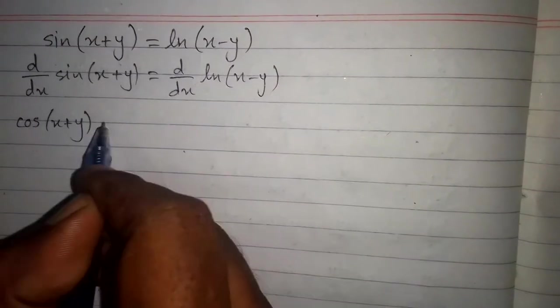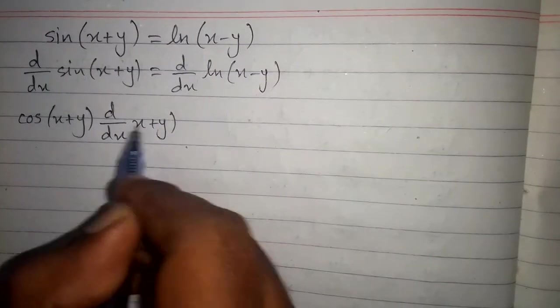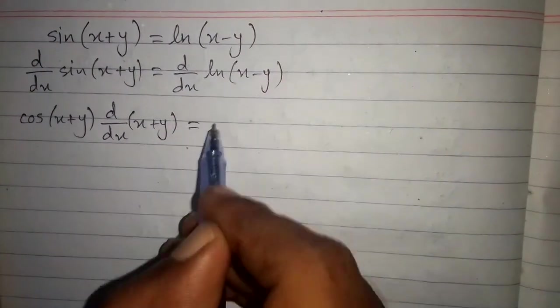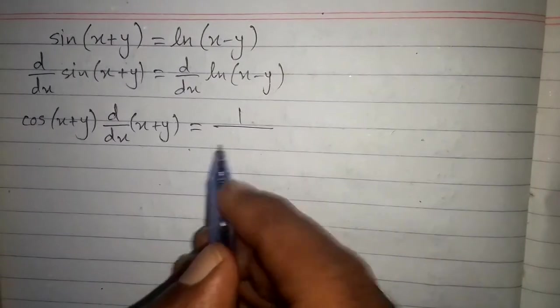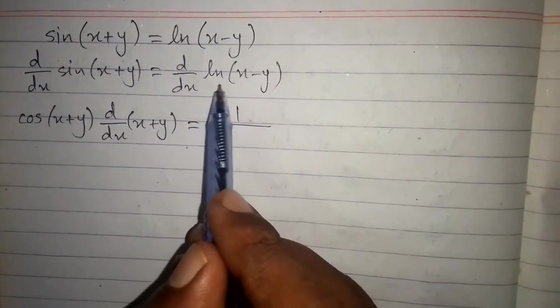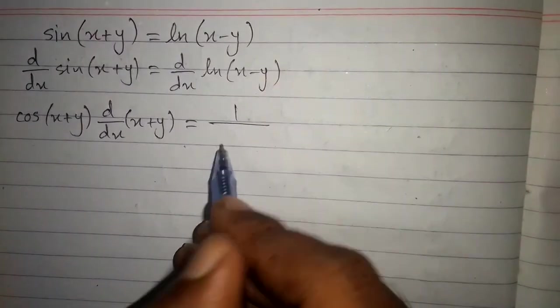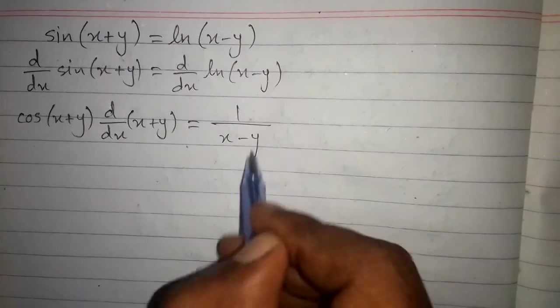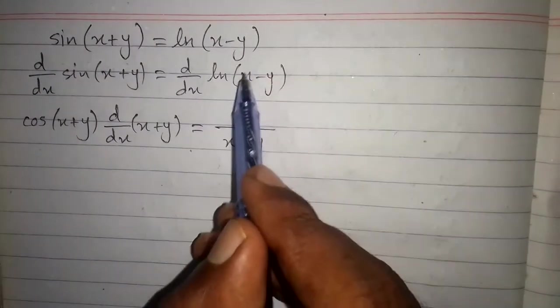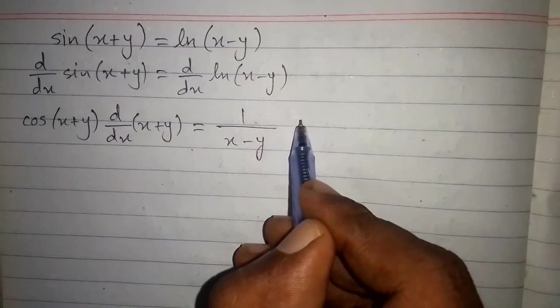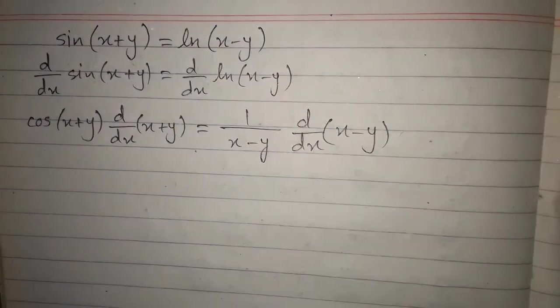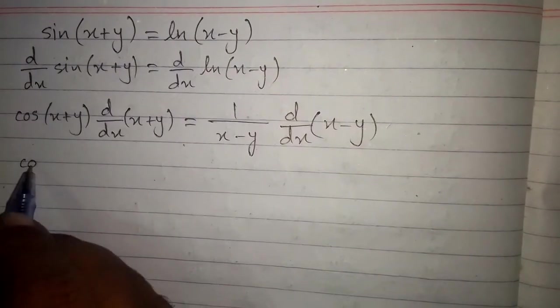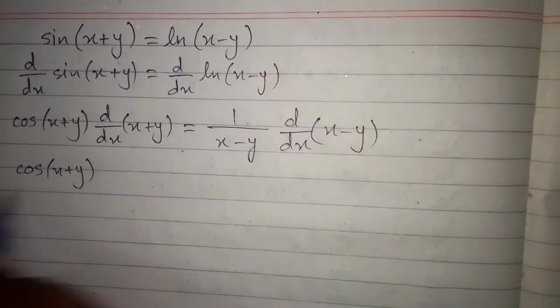The derivative of sine is cosine, so we write cos of x plus y, multiplied by the derivative of x plus y. Then the derivative of ln of something is 1 over that something, so the derivative of ln of x minus y is 1 upon x minus y, multiplied by the derivative of the inside, which is d/dx of x minus y.